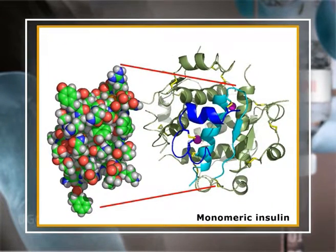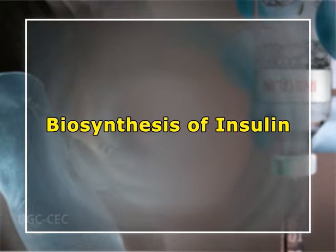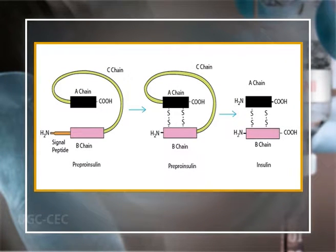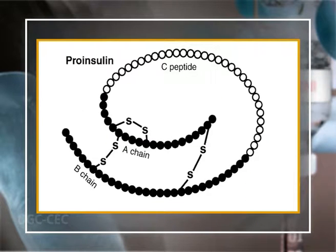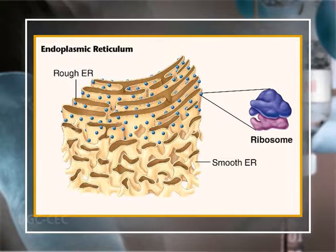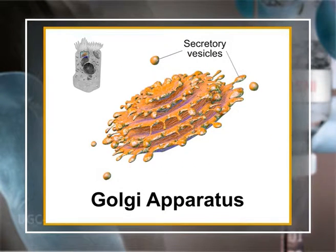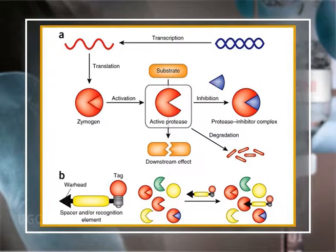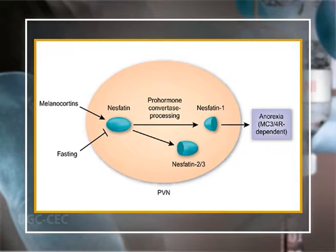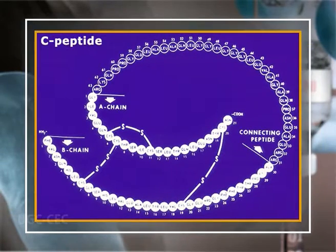Monomeric insulin is now available for therapy. Regarding biosynthesis: insulin is synthesized as a large precursor polypeptide chain, pre-pro-insulin, with 109 amino acids. It is rapidly converted to pro-insulin in the endoplasmic reticulum by removal of a leader sequence of 23 amino acids. The pro-insulin, with 86 amino acids, is transported to the Golgi apparatus where it is cleaved by proteases — specifically pro-hormone convertase 1 and 2 — releasing the C peptide, or connecting peptide, of 33 amino acids.